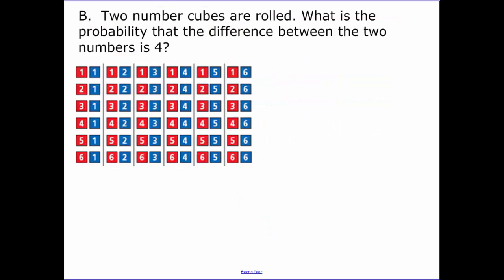Two number cubes are rolled, and I have a picture of all the different possibilities here. What is the probability that the difference between the two numbers is four? So the difference, when I subtract them, their difference is four. So how many total outcomes do I have? We have one, two, three, four, five, six by six, so there's 36 possible outcomes. Now, how many of them has the difference being four?